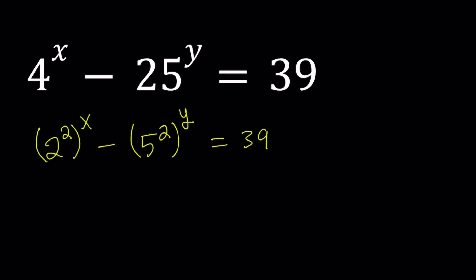Notice that we have powers of powers. Think about the property of powers. When we have a to the power b to the power c, it means a to the power bc, but it can also be written as a to the power c to the power b. In other words, the powers can be switched. So let's write 2 to the power 2 to the power x as 2 to the power x to the power 2, minus 5 to the power y to the power 2, equals 39.